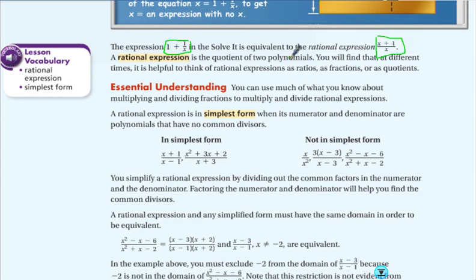1 plus 1 over x is equivalent to x plus 1 over x. A rational expression is the quotient of two polynomials, we know that, we've been graphing them. Big deal stuff is right here, we're going to look for them in simplest form. A rational expression is in simplest form when its numerator and denominator are polynomials that have no common divisors.